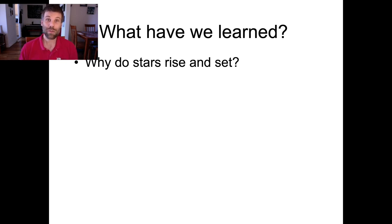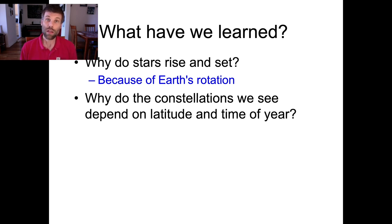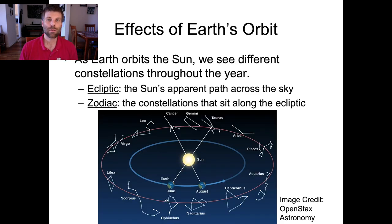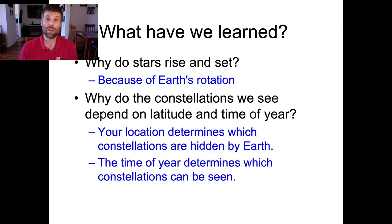We've talked about the celestial sphere and how it can be used to understand the sky. Stars rise and set because of Earth's rotation — as Earth rotates under the stars, the stars appear to move. We see the constellations change over the course of a year because of Earth's orbit around the Sun, and the path that the Sun takes through those background stars is called the ecliptic. The ecliptic is tilted 23.5 degrees compared to the celestial equator due to the tilt of Earth's rotation axis. Thank you all for joining me, and I hope to see you again for another topic in astronomy.